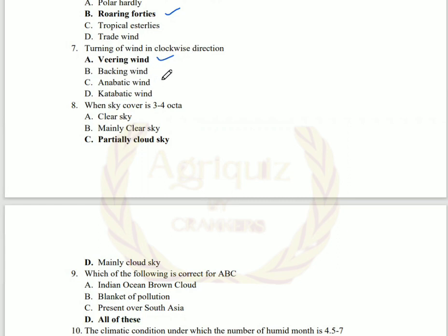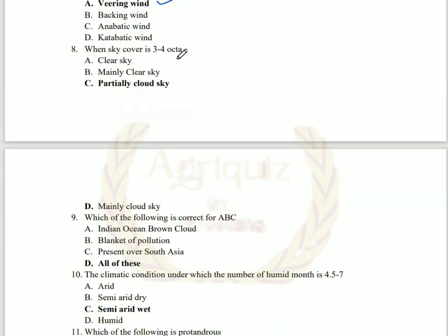Anabatic wind is also known as valley wind, whereas katabatic wind is known as mountain wind. When the sky cover is 3 to 4 octas, it is known as partially cloudy sky. A value less than 2 octas indicates clear sky.